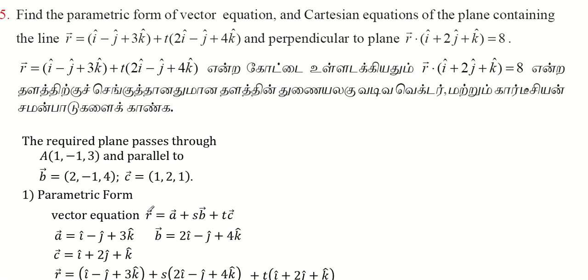For the parametric form, r vector is equal to a vector plus sb vector plus tc vector. Now, a vector is i vector minus j vector plus 3k vector. In this case, b vector is 2i minus j plus 4k.